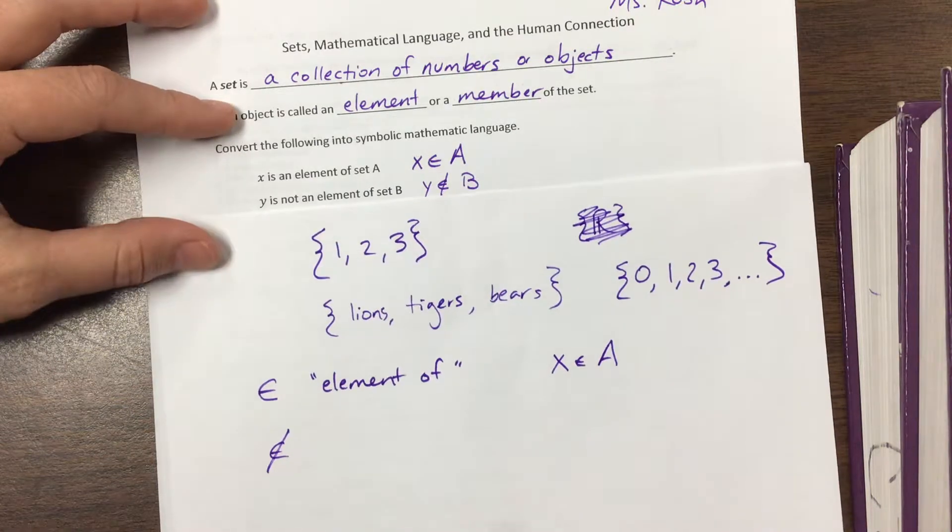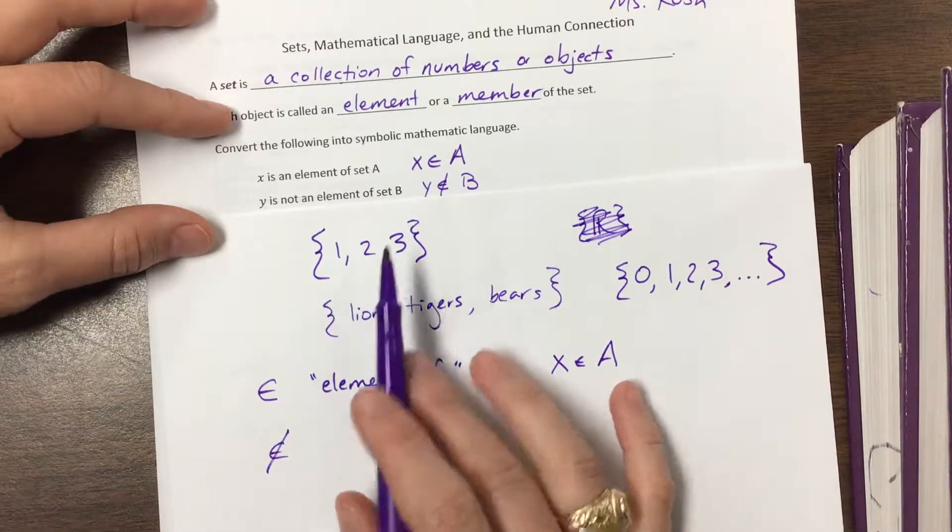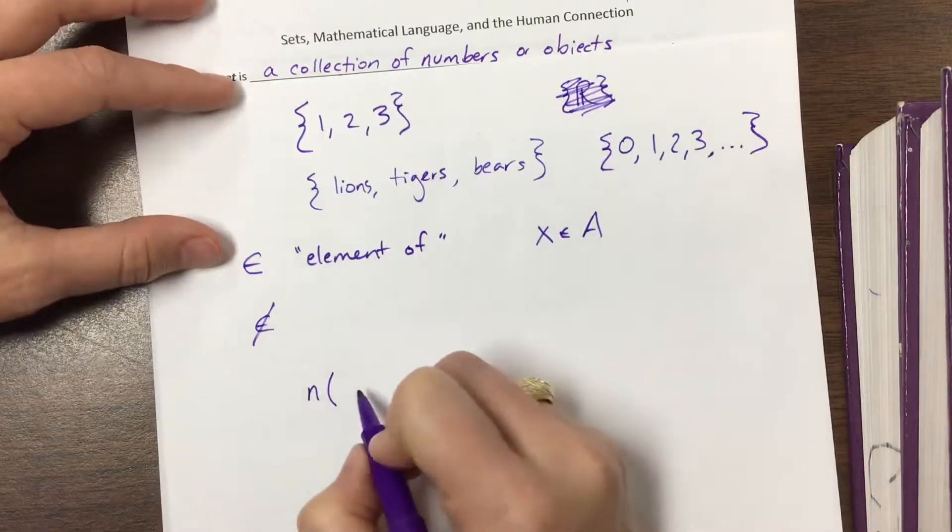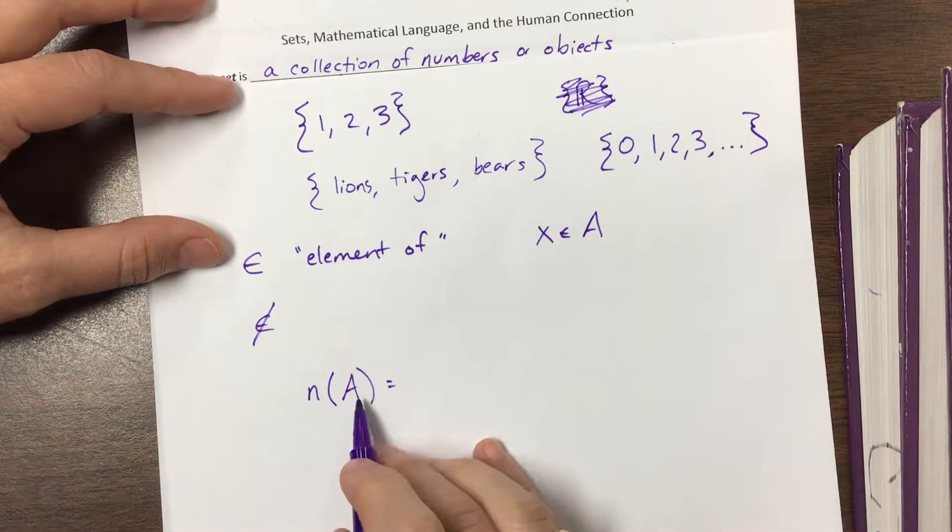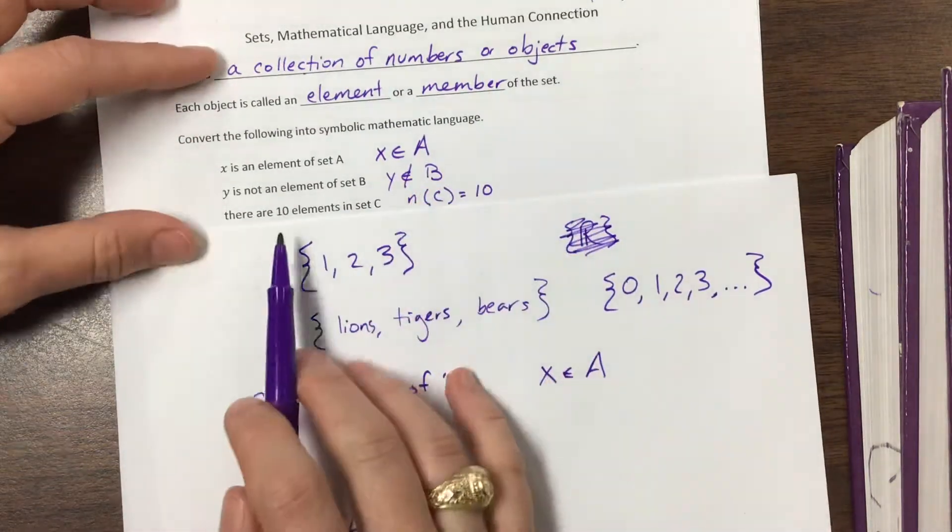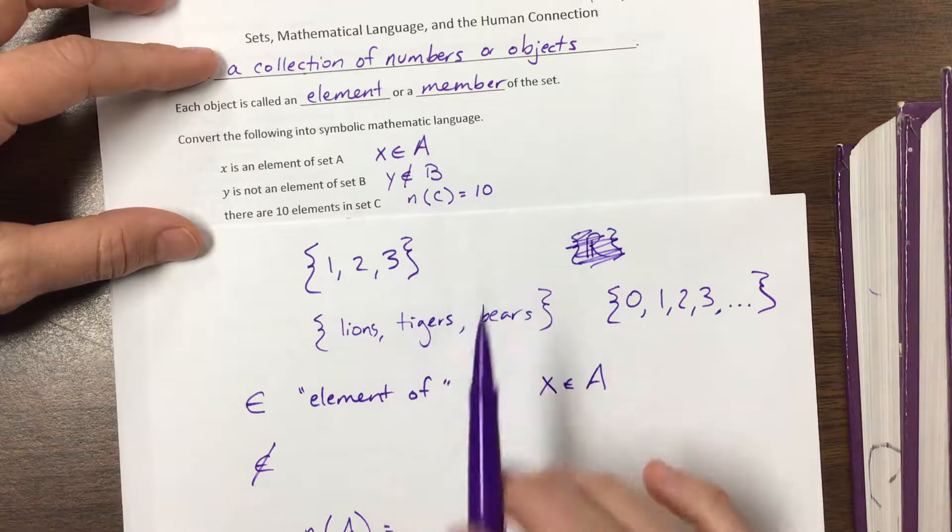The next one, if I want to figure out how many elements are in a particular set, I can say the number in A is equal to. And this means the number of elements in set A. So if I said there are 10 elements in set C, the number of elements of set C is equal to 10.